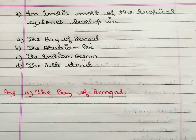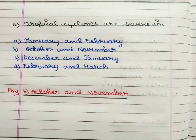Next question: in India, most of the tropical cyclones develop in option A the Bay of Bengal, option B the Arabian Sea, option C the Indian Ocean, option D the Palk Strait. The correct answer is option A the Bay of Bengal.